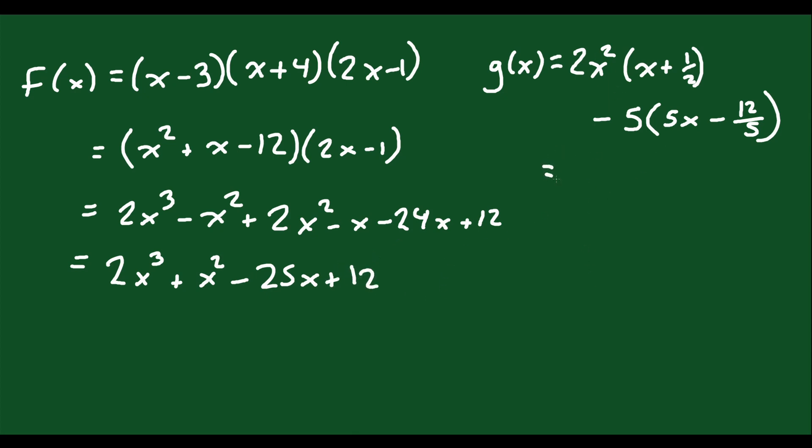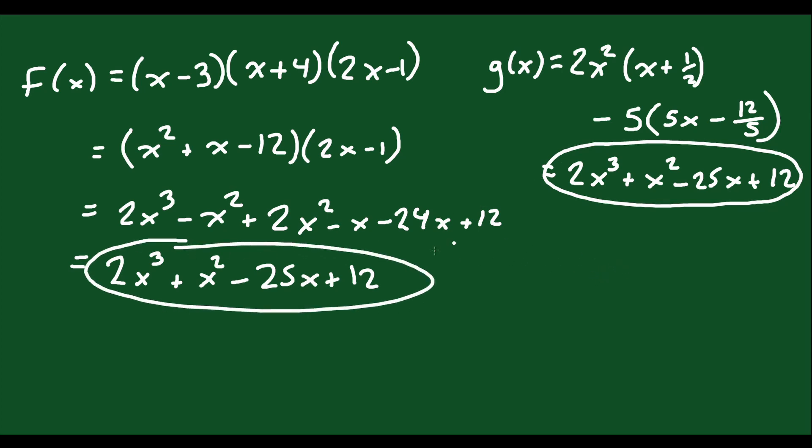Now we do g(x). We just distribute this into the bracket and then this into this bracket. So you'll get 2x cubed plus 2x squared times 1 half is just x squared minus 25x plus negative 5 times negative 12 over 5 is just plus 12. So as you can see, you get the exact same answer here as you get over here. Therefore, we would say yes, they are equivalent.